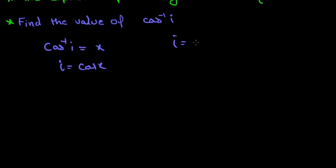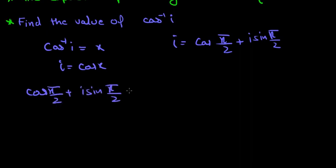Now, i can be written as cos(π/2), which is 0, plus iota sin(π/2), sin(π/2) is 1. So, writing it like this, cos(π/2) plus iota sin(π/2) is equal to cos x. Now, comparing real and imaginary parts, we get cos x is equal to cos(π/2). So, we get x as π/2.